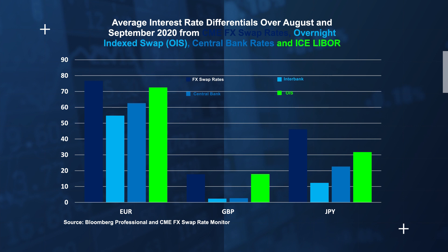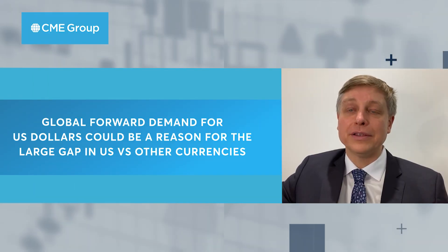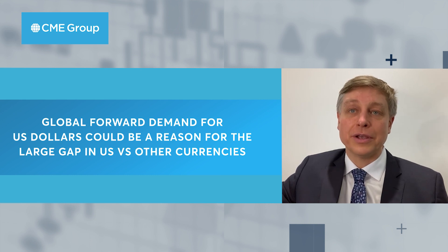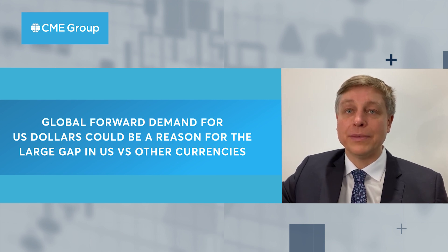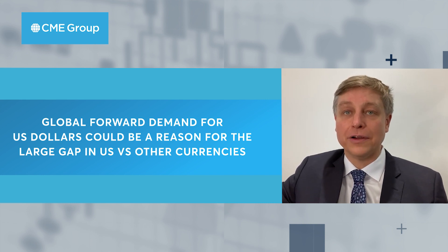This begs the question: why would the currency market imply that US rates are higher relative to other countries' rates so consistently when compared to the interest rate markets? One answer is that the relatively higher US rates implied in the currency markets might reflect a global forward demand for US dollars.